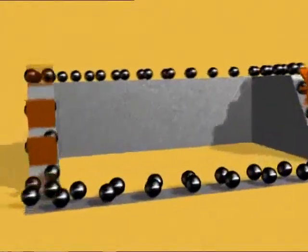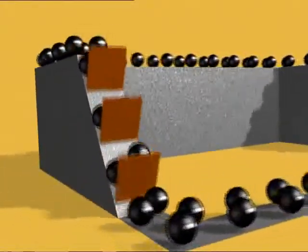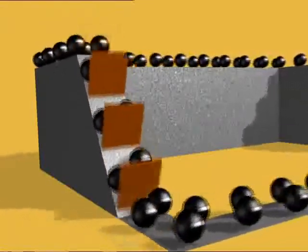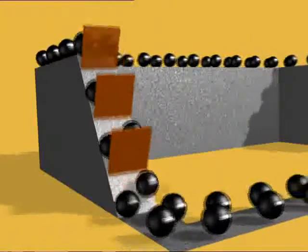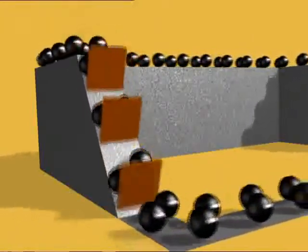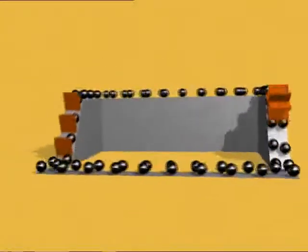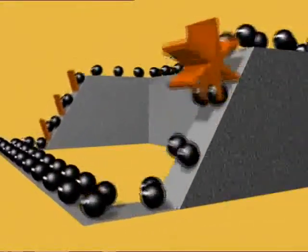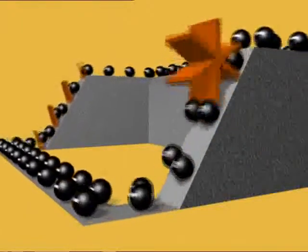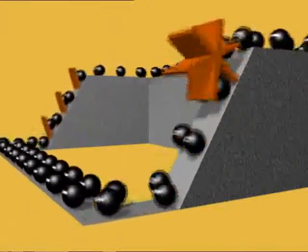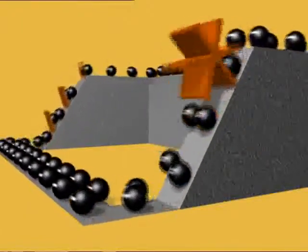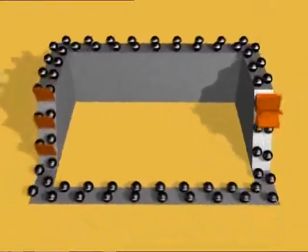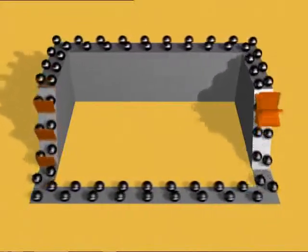The escalator represents the source of electrical energy, like a battery. It gives the charges potential energy by lifting them to a higher level. The paddle wheel represents the electrical component, like a light bulb. As the charges pass the wheel, they turn it and fall to a lower level, losing potential energy. All the electrons return to the escalator, where they gain potential energy again.